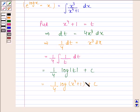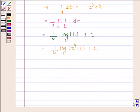We don't need to write mod here because x to the power 4 is always positive and so is x to the power 4 plus 1. Hence our required answer is 1 by 4 log x to the power 4 plus 1 plus C.